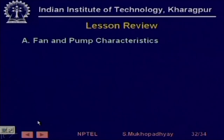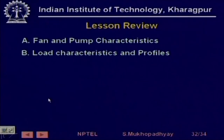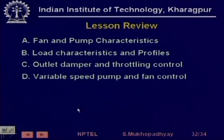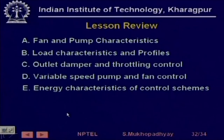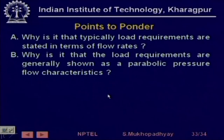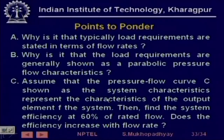In this lesson we have seen the fan and pump characteristics, the load characteristics and typical load profiles, and two kinds of control: outlet damper for fans and throttling for pumps, compared against variable speed control. We have seen the energy characteristics of these control schemes and gotten an idea of the energy savings. A few questions to consider: why are load requirements stated in terms of flow rates, why are load requirements generally shown as parabolic pressure-flow characteristics, and how does efficiency vary as flow is reduced?